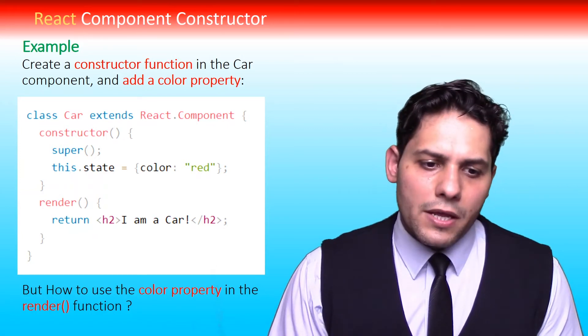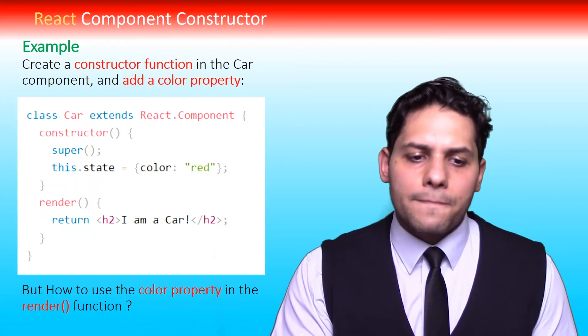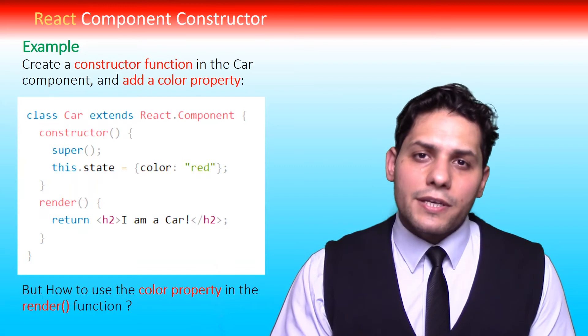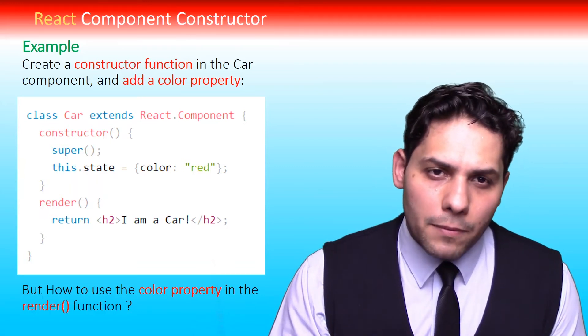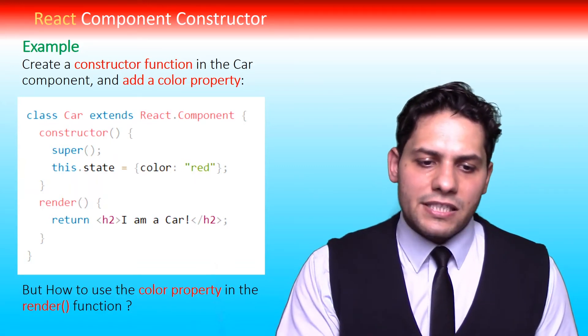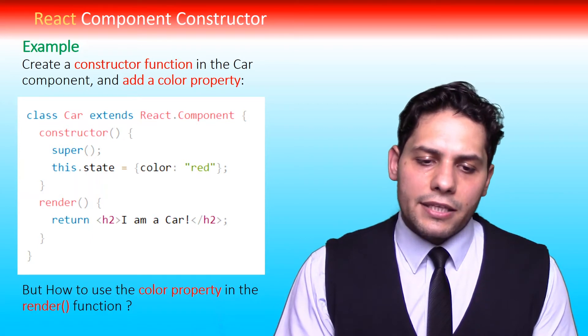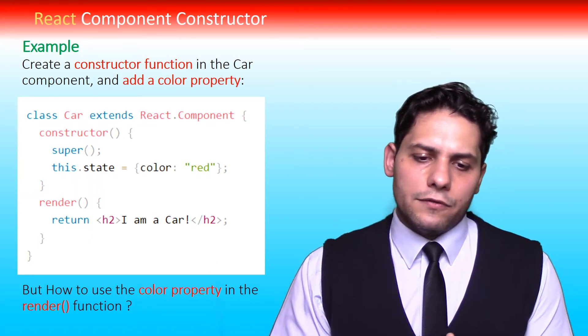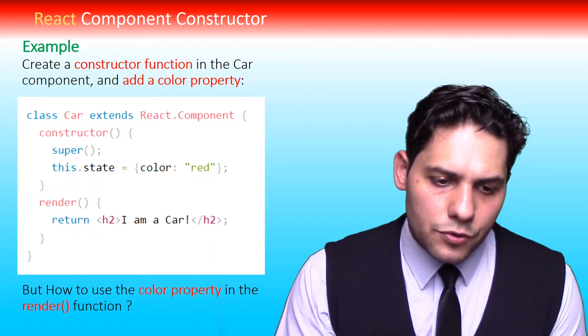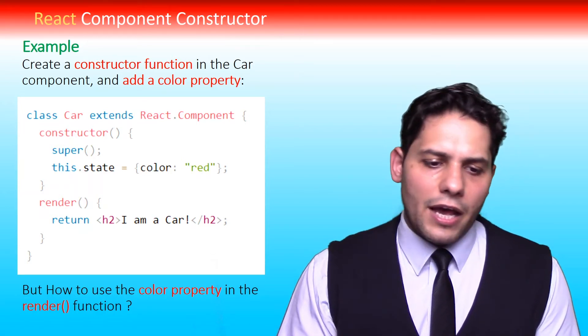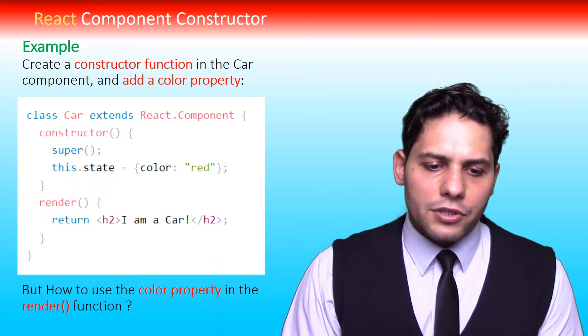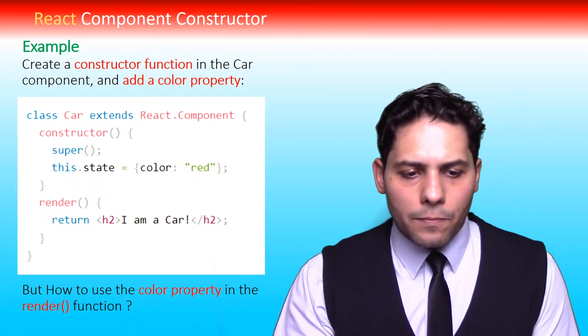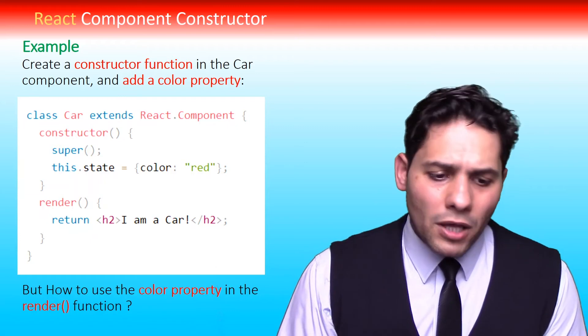After writing constructor, we should add super for initiating the component properties. Here we have this.state, and we use the color property and we give a value of red to it. Then we have a normal render function here. For example, 'I am a Car' - this component will return it.